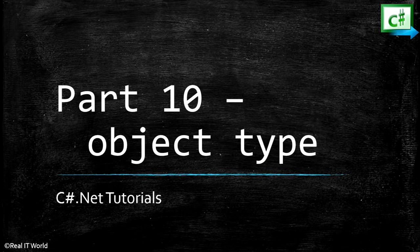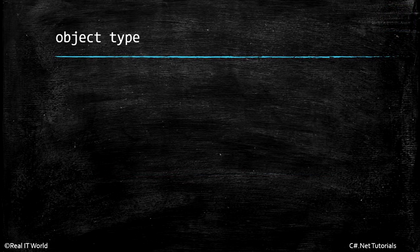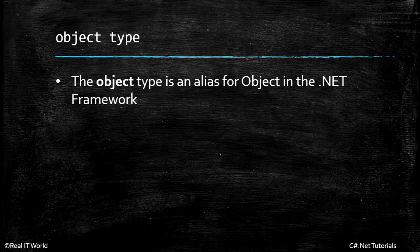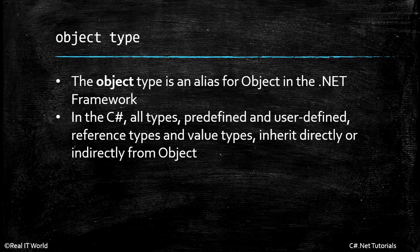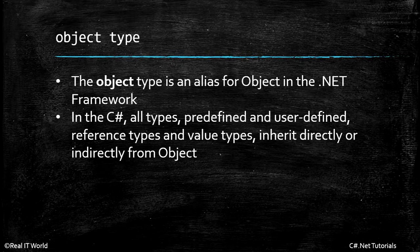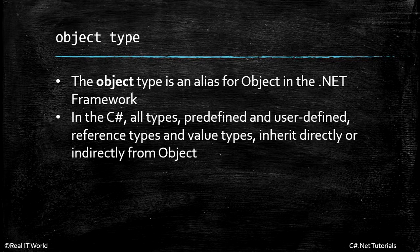Welcome to C Sharp .Net Tutorials Part 10: Object Type in C Sharp. What is an object type? The object type is an alias for object in the .Net Framework. In C Sharp, all types — predefined types, user-defined types, reference types, or value types — are directly or indirectly inheriting from object type. So this object type is the parent of every type in C Sharp.